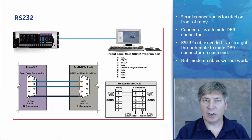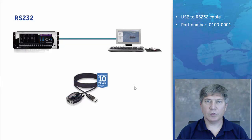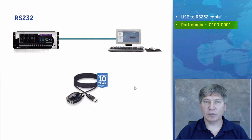Three signals are used in the 9-pin connector: Pin 2 connects to pin 2, pin 3 to pin 3, and pin 5 to pin 5. A non-modem cable connecting pin 2 to pin 3 of the other end will not work. For newer computers without a serial connection, the USB port can be used with an RS-232 USB cable available from our online store, part number 0100-0001. This cable has a Windows driver that needs to be installed before use.